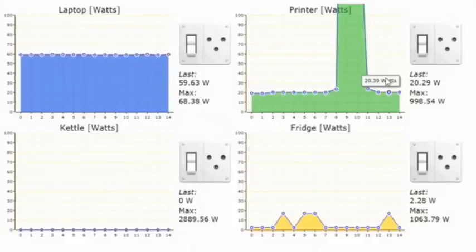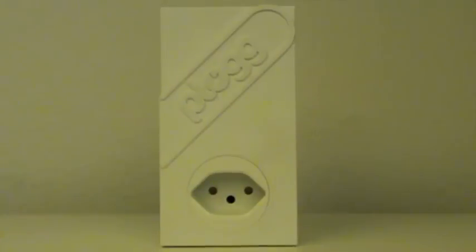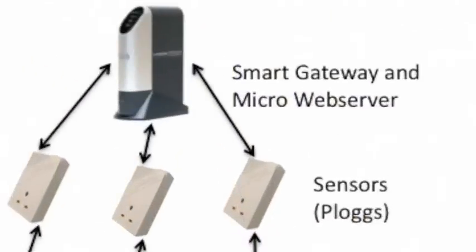In this application scenario, we connect a fridge, a kettle, a laptop computer and a printer to the plugs. We then run our gateway software on any device at home, like a computer or a home router, and let it automatically discover all the plugs in the environment.